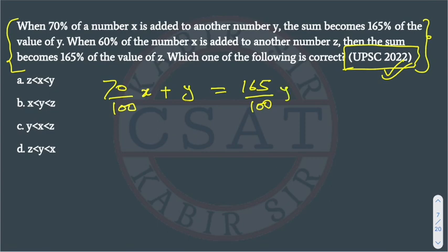So it will become 70x plus 100y is equal to 165y. When we solve this further it will become 70x, 100y will go this side, so it will become 165y minus 100y.